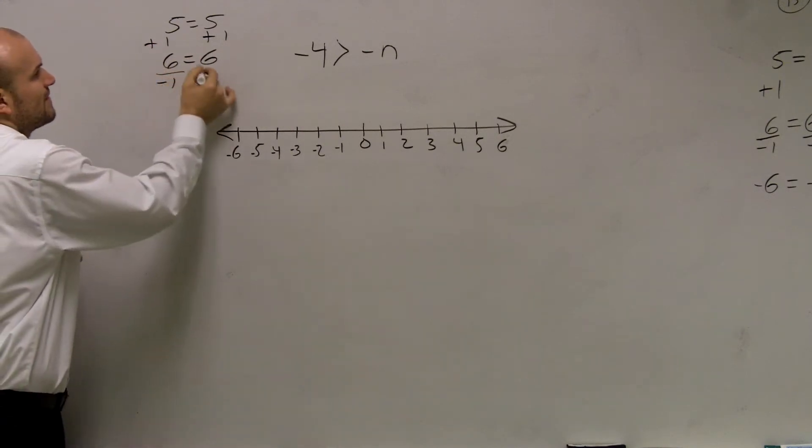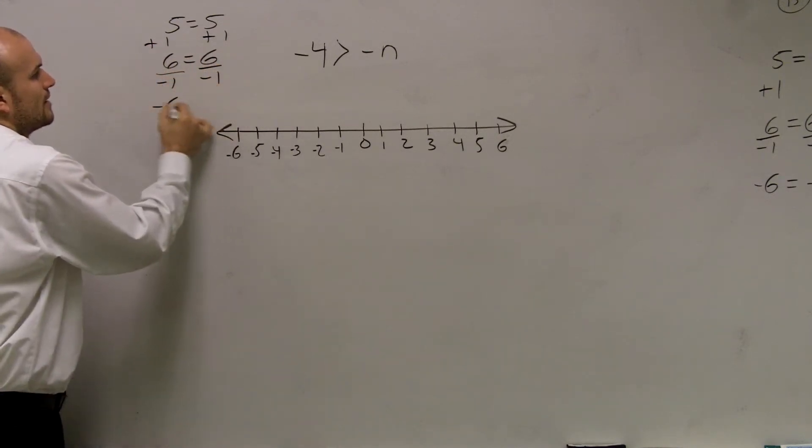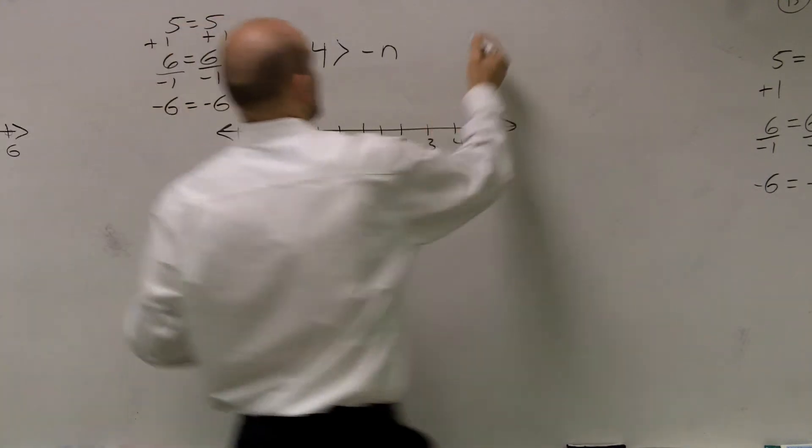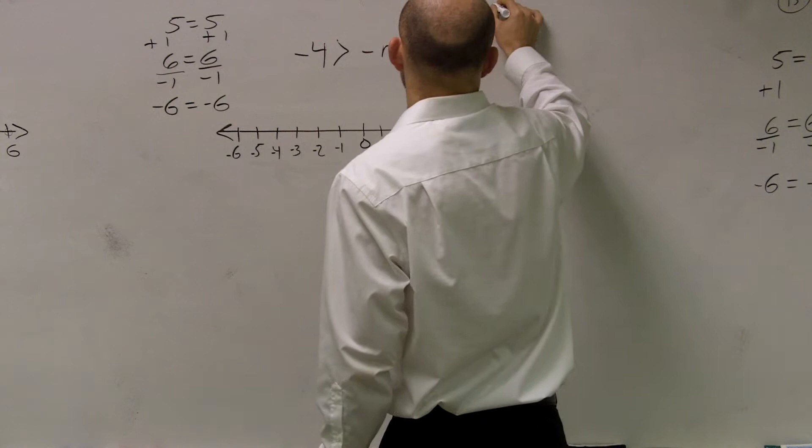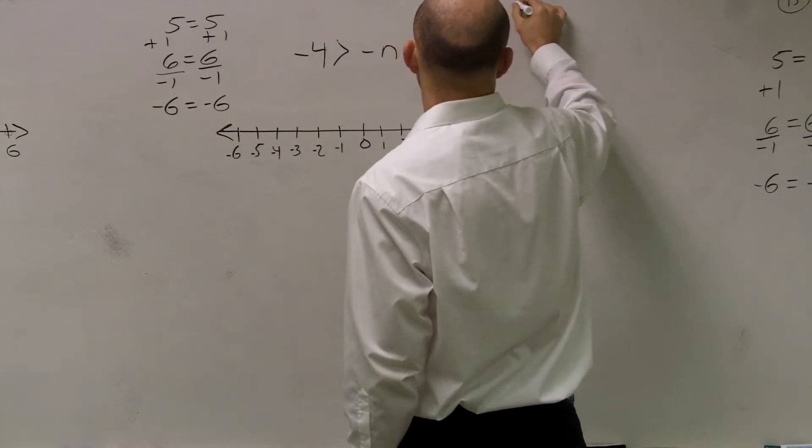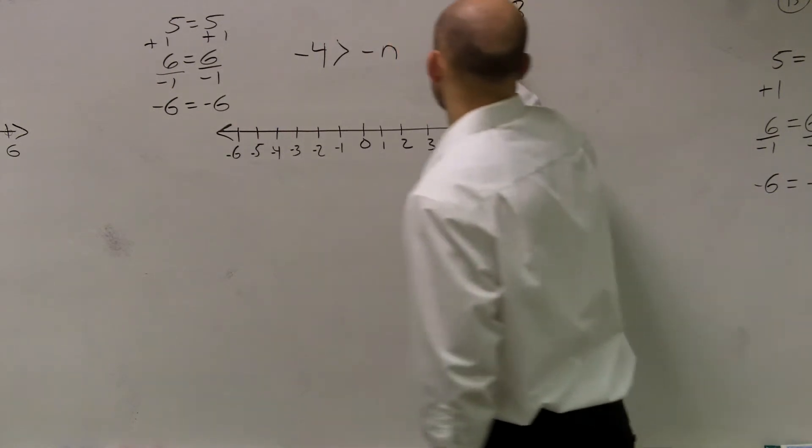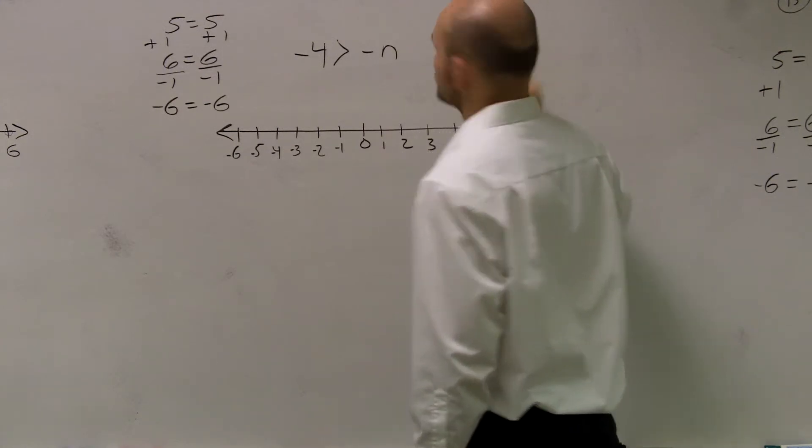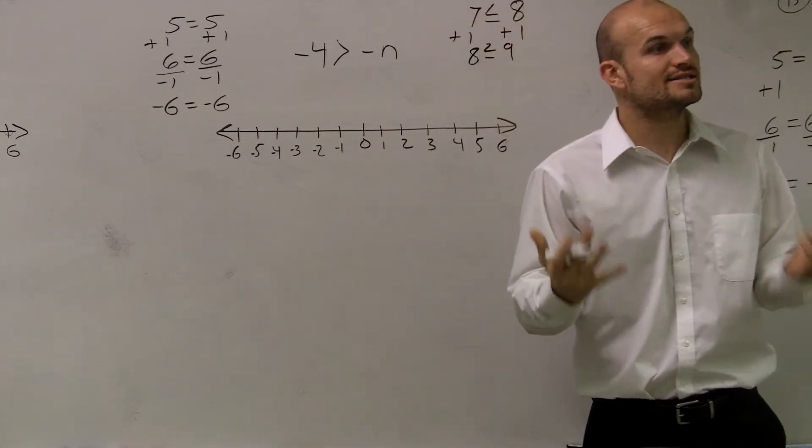Same thing. What about if I divide by negative 1? My equation is still true. Inequalities are exactly the same way. Let's say 7 is less than or equal to 8. If you add 1 to both sides, you have 8 is less than or equal to 9. Your inequality still remains true.